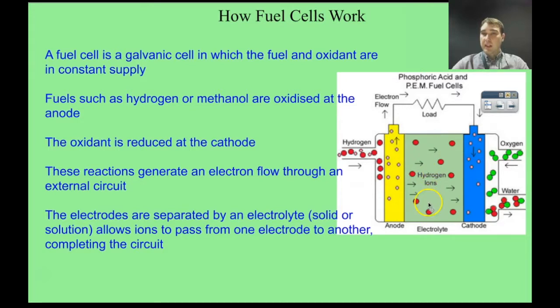Hydrogen ions are flowing through an electrolyte. The anode and cathode are separated by an electrolyte which could be solid or liquid. In this case we have hydrogen ions passing through from the anode to the cathode and that generates water at the cathode. The electrolyte completes the circuit because we have electron flow on the external circuit and ion flow on the internal circuit.